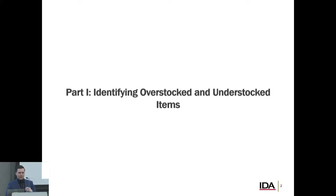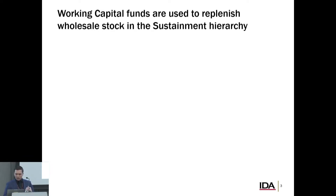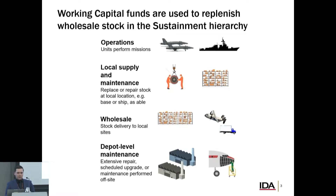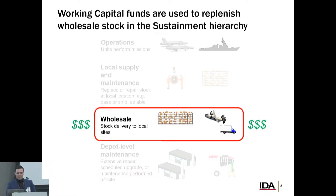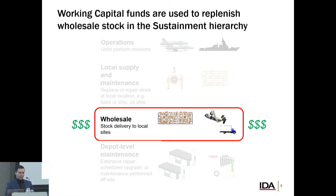I'm going to start by identifying overstocked and understocked items in the entire fleet supply system. The DoD has access to a pool of money called the Working Capital Fund — not subject to annual Congressional approval — which allows the organization to maintain stability year-round in the sustainment hierarchy. But this creates a problem: they need to buy today a multitude of varied items for the next couple of years, accomplished with a sophisticated version of guessing. Many of these items are just badly behaved in a statistical sense, making it hard to know exactly what you need.